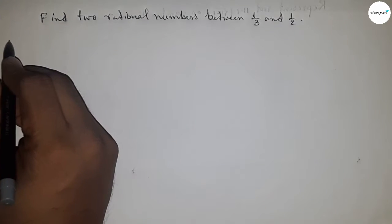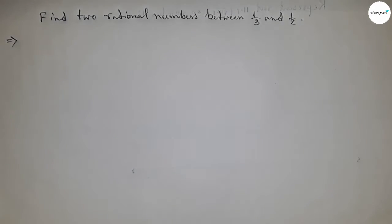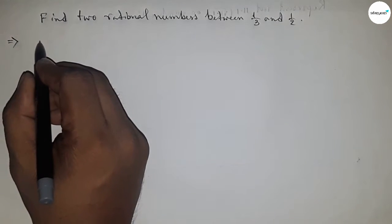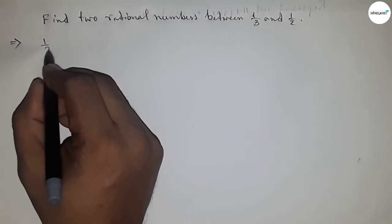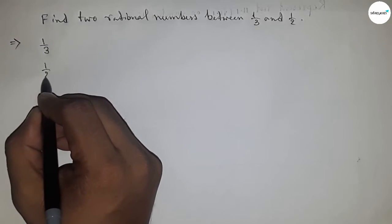So let's start. First of all, write down here the given rational numbers: 1 upon 3 and 1 upon 2.